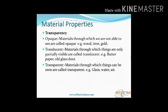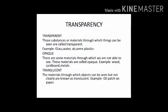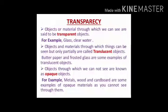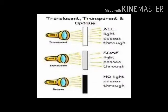Transparency के basis पर materials तीन types के होते हैं: transparent, translucent, और opaque। Transparent materials वो हैं जिनसे हम आसानी से देख सकते हैं; translucent वो जिनसे partially दिखाई देता है; और opaque वो जिनके through बिल्कुल भी नहीं देख सकते। Transparent materials के examples हैं glass, some plastics, air; translucent के हैं muddy water, oily paper; और opaque के हैं wood, metal आदि। Transparent से सारी light pass हो जाती है, translucent से कुछ light pass होती है, और opaque से बिल्कुल भी light pass नहीं होती।